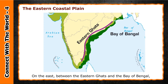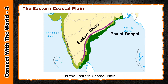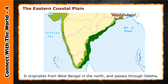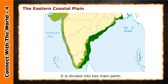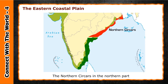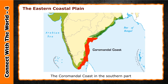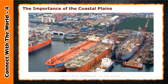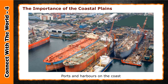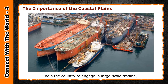On the east, between the Eastern Ghats and the Bay of Bengal, is the eastern coastal plain. It originates from West Bengal in the north and passes through Odisha, Andhra Pradesh, and Tamil Nadu. It is divided into two main parts: the Northern Circars in the northern part and the Coromandal coast in the southern part.